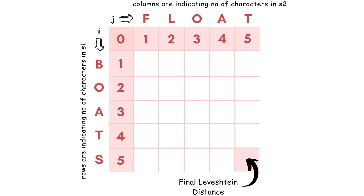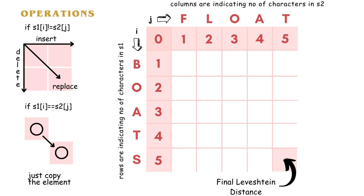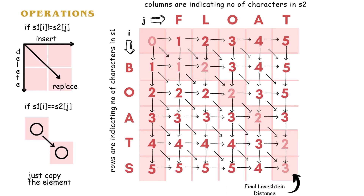Let's look at an example where the source string is 'boats' and the target string is 'float'. We need to transform 'boats' to 'float'. If the characters at a position are the same, we copy the diagonal element; if not, we find the minimum of three adjacent cells and add one. Using this algorithm, we fill out the matrix to find the Levenshtein distance. The minimum edit distance required to convert 'boats' to 'float' is 3. We can backtrack from the bottom-right corner to the top-left corner to find the sequence of operations, as shown in the figure.